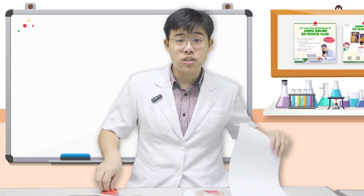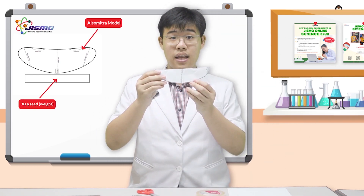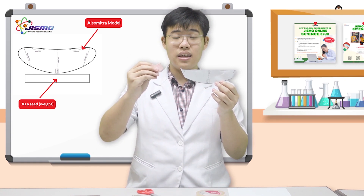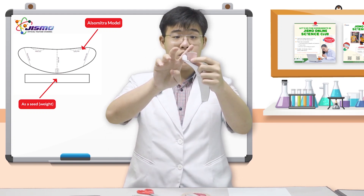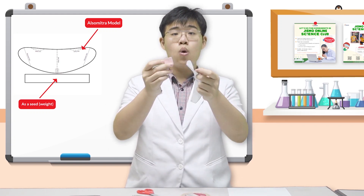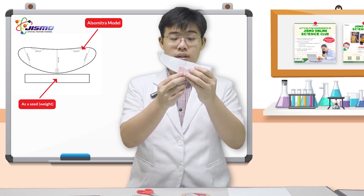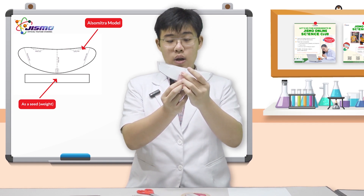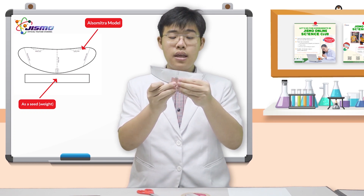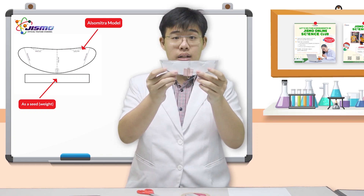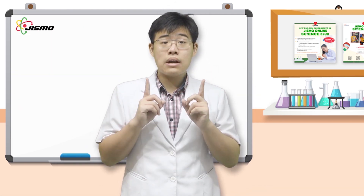First, we cut this piece of paper to get the wing shape. Then we attach tape here, and attach the paper clip in the middle to place the seed at the center of the Alsomitra model. The paper clip also centers the center of gravity of the whole structure in the middle. There we have it — this is the Alsomitra model!